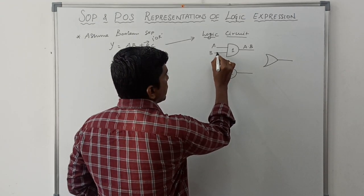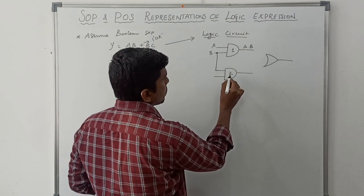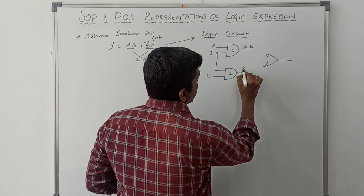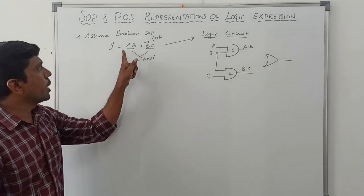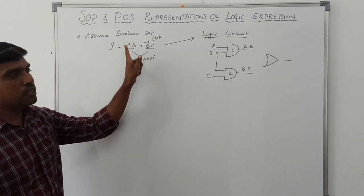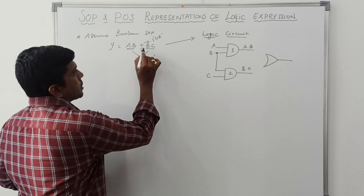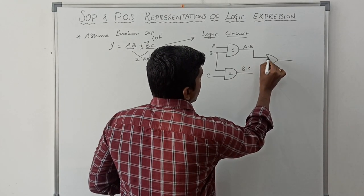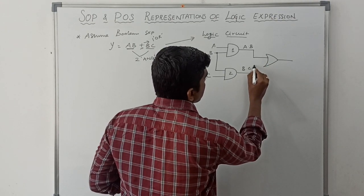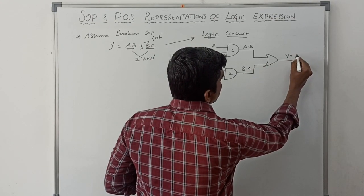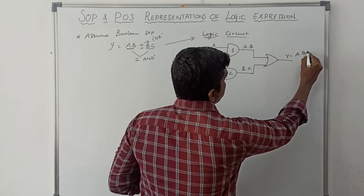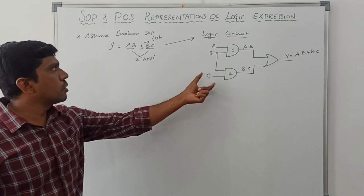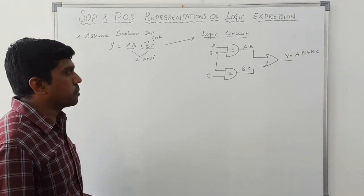The second product term is B dot C. B is given as input to the second AND gate along with C, producing B dot C. So A dot B and B dot C are the two product terms. The plus means OR function — the sum of these two product terms. The final output is Y equal to A dot B plus B dot C, realized as a logic circuit for this corresponding Boolean expression.